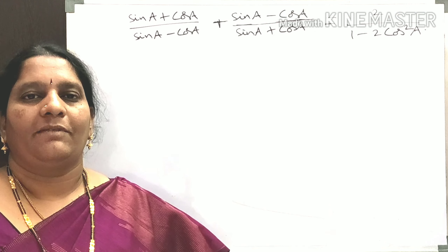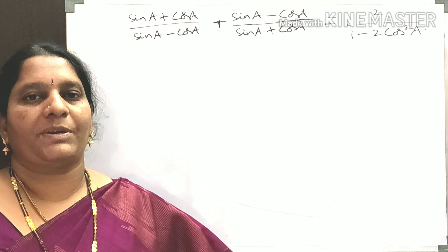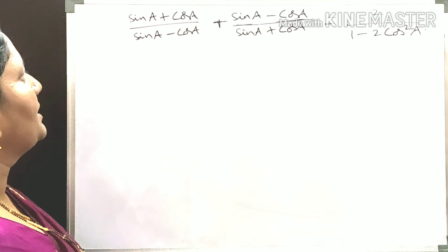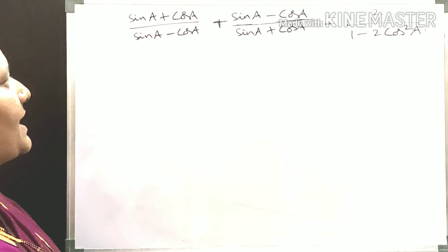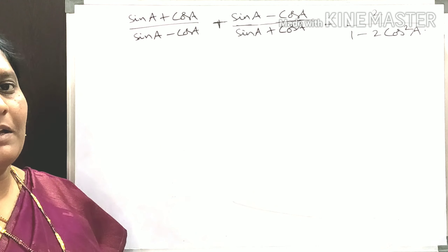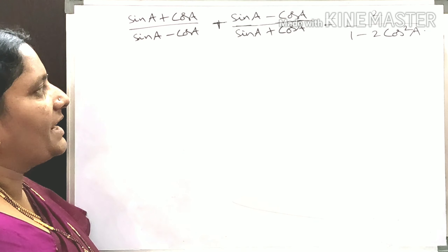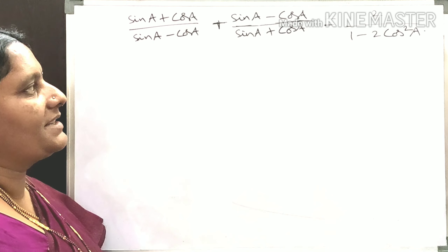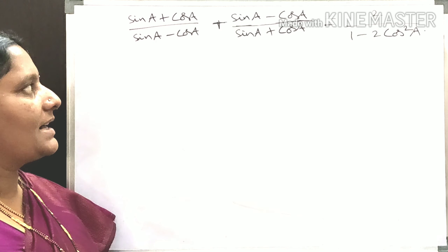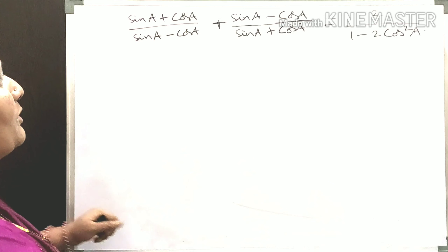Hello everybody, welcome back to another session of Mathematics Made Easy. Now the question is: show that (sinA + cosA)/(sinA - cosA) + (sinA - cosA)/(sinA + cosA) is equal to 2/(1 - 2cos²A).